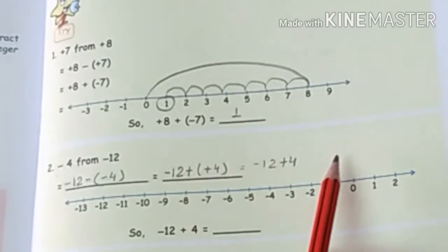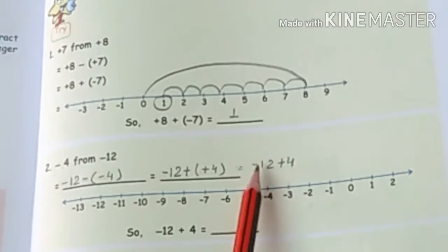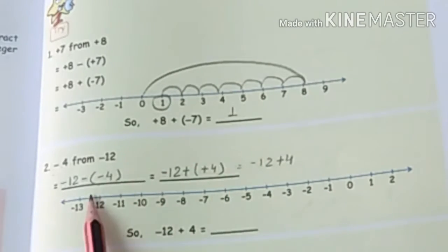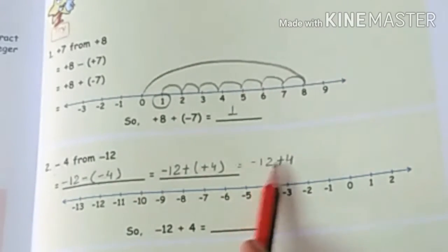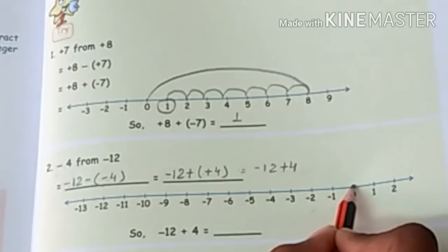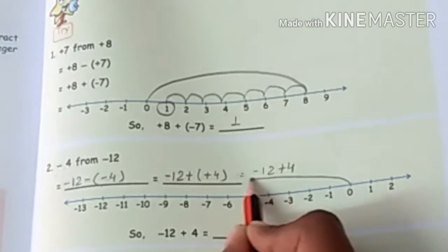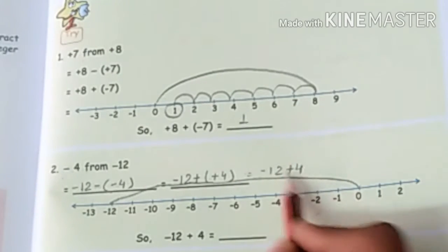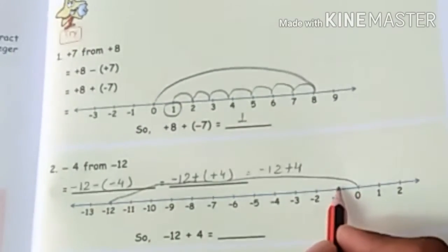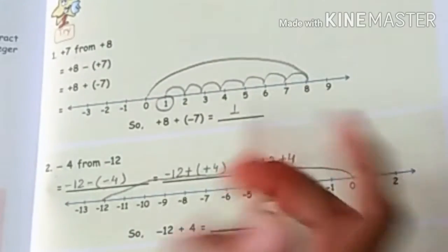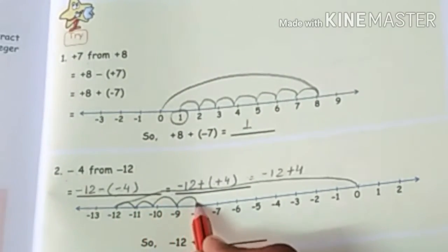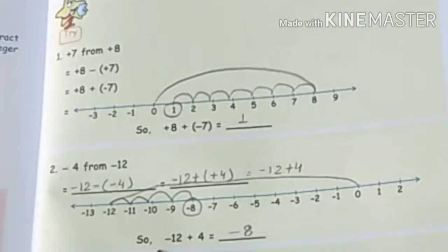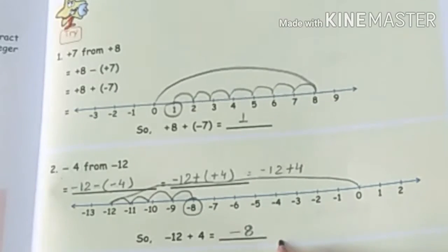So it is minus 12 plus plus 4. There is a minus and a plus. First, if you take zero to minus 12, I will show negative numbers on the left side. So from zero we go to minus 12. Then, what do we have to add? Plus 4. Plus 4 means positive number, so right hand side 4 steps you have to go. 1, 2, 3, and 4 and the answer is minus 8. So minus 12 plus 4 equals minus 8.